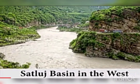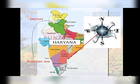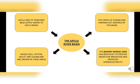The first one is the Satluj river basin, which lies on the west side of India. The river Satluj flows towards the south-east direction and then it joins the Indus river in Pakistan, and then it flows into the Arabian Sea. The states which come under this basin are Punjab and Haryana, which get watered by this basin.